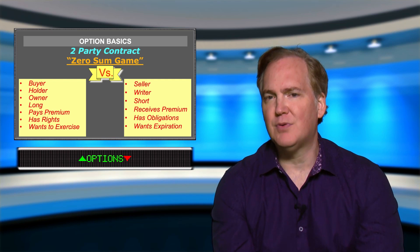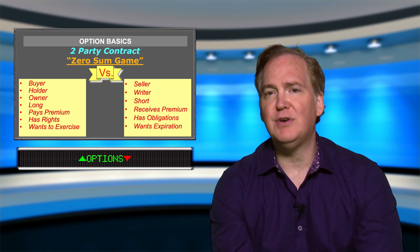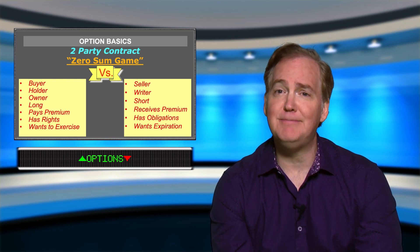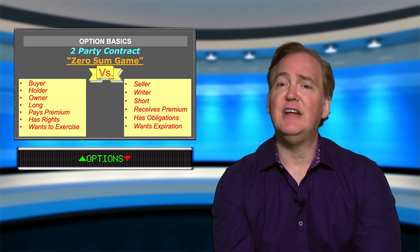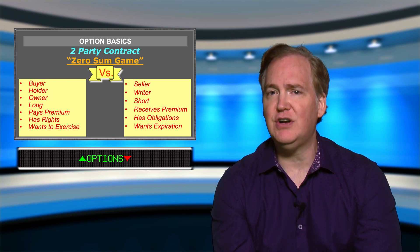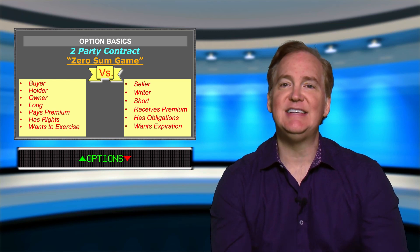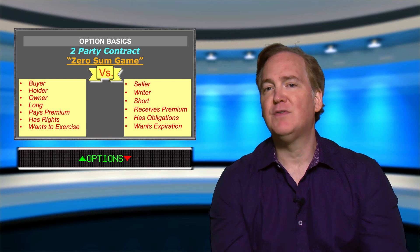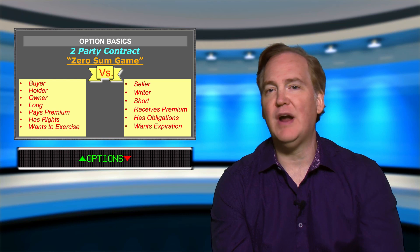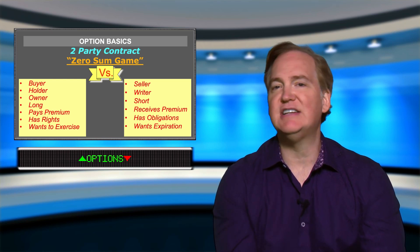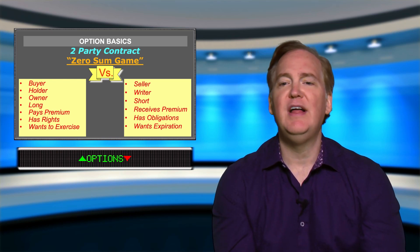Because you paid the premium, should your car be involved in an accident, you have the right to call up your car insurance company and say, please fix my car — I was just rear-ended. Now the insurance company, because they took your premium, is obligated to fix it. This is exactly how an option contract works: the buyer has a right, the seller takes on an obligation, and the buyer pays a premium to the seller.